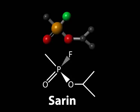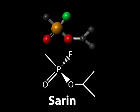Here we see a molecule of the nerve agent sarin. This is one of the many organophosphorus compounds that has the ability to inhibit the enzyme acetylcholinesterase.